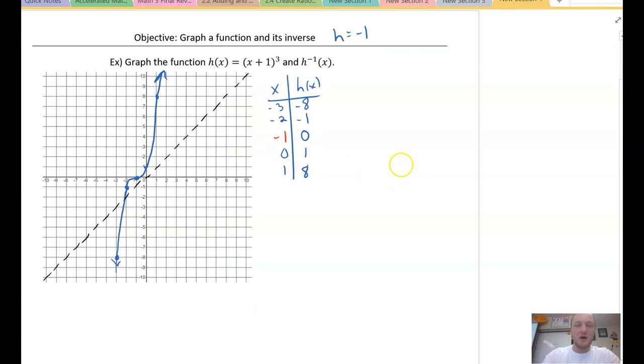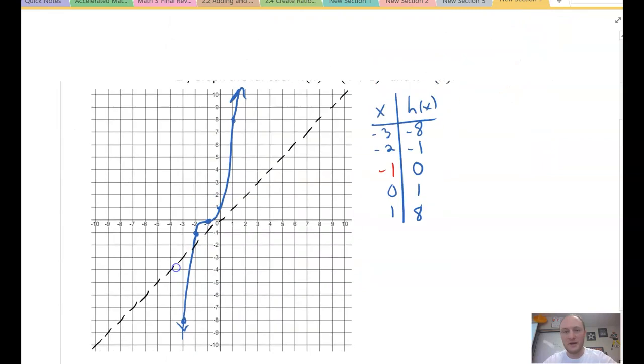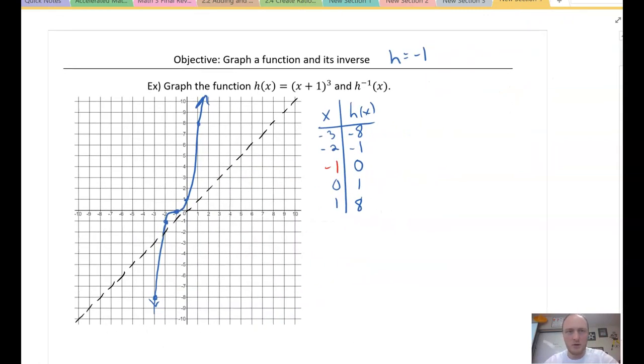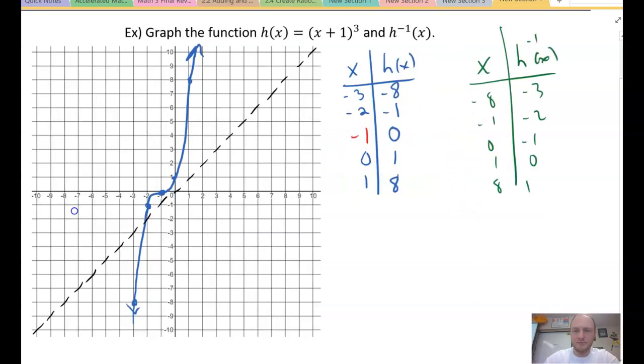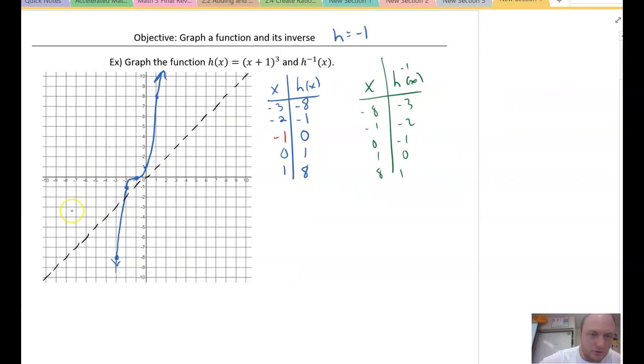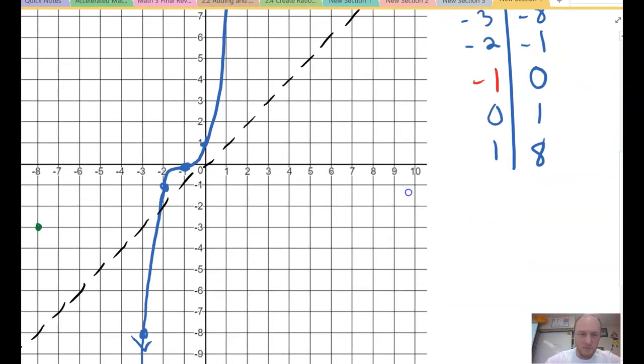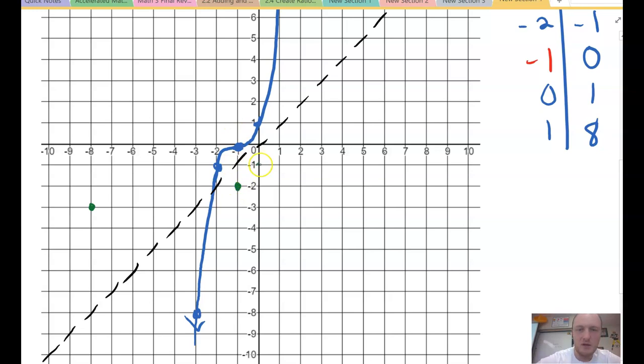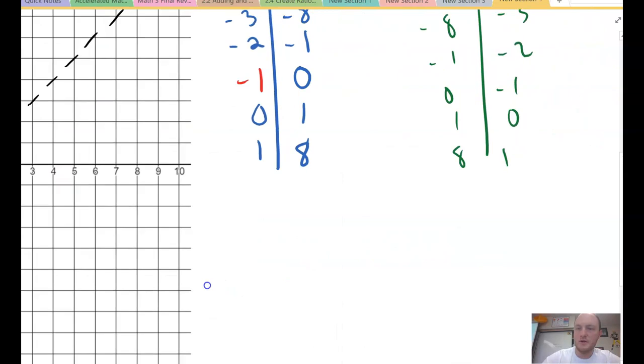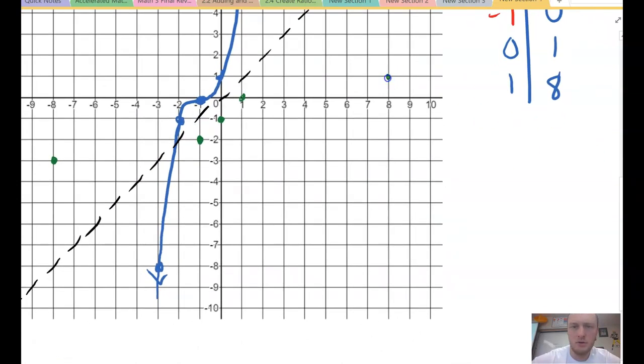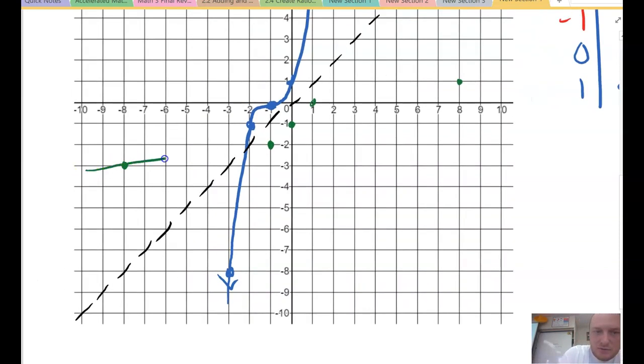All right. So, going back to this one, here's our graph. Now, what we have to do, we just have to graph our inverse. x, h inverse of x. I'll switch my x and y values. So, (-8,-3), (-1,-2), (0,-1), (1,0) and (8,1). So, draw a curve. And again, I'll curl, curl. And there we go.